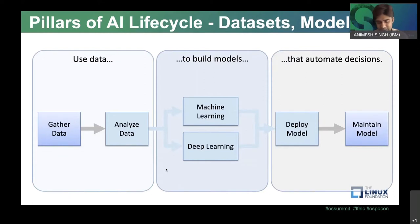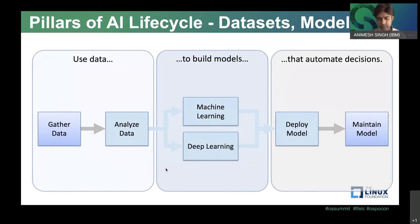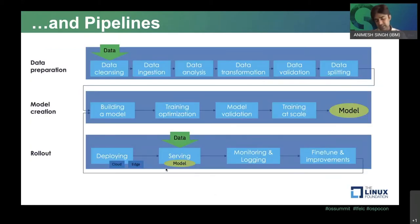If you are familiar with the machine learning and AI world, at a very fundamental level, what we are doing is using data to build models which are then automating decisions. This is throughout the AI lifecycle — we use data to build models which help automate decisions. This is a high-level view of the AI lifecycle, but if you look from the pillars of AI lifecycle, datasets and models totally stand out.